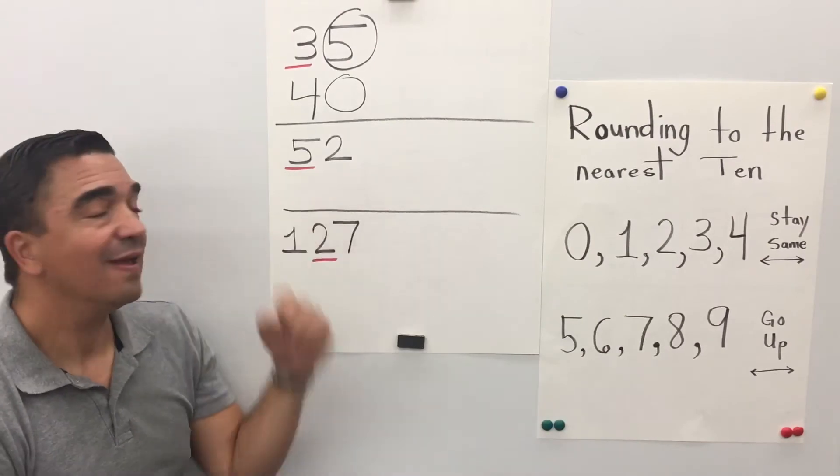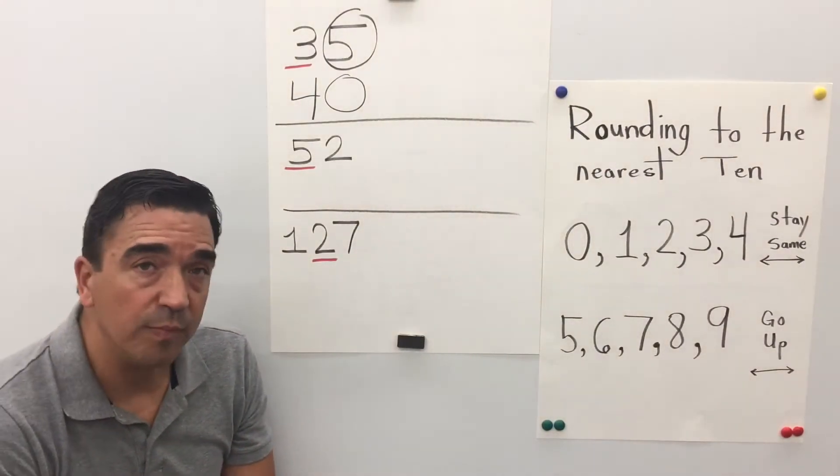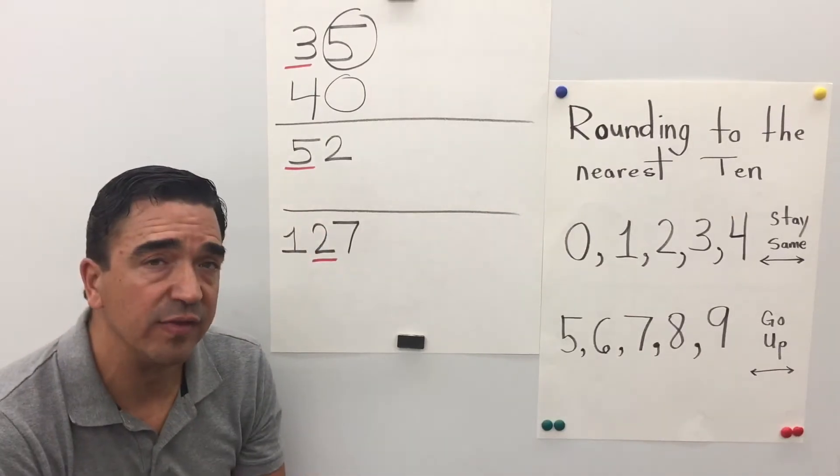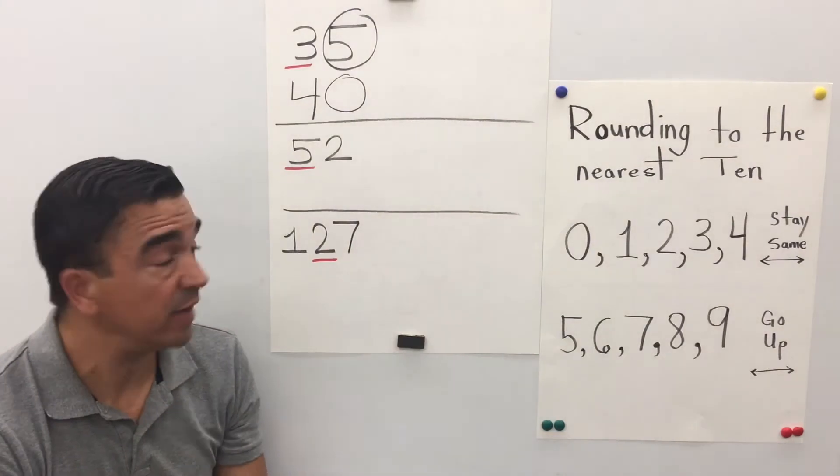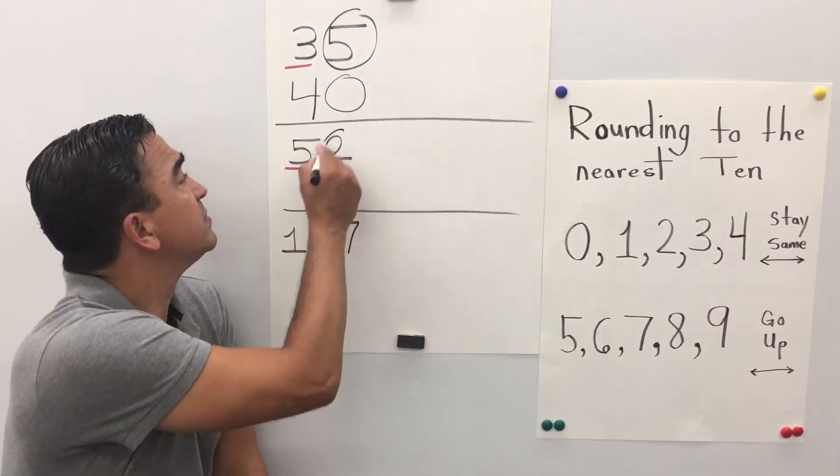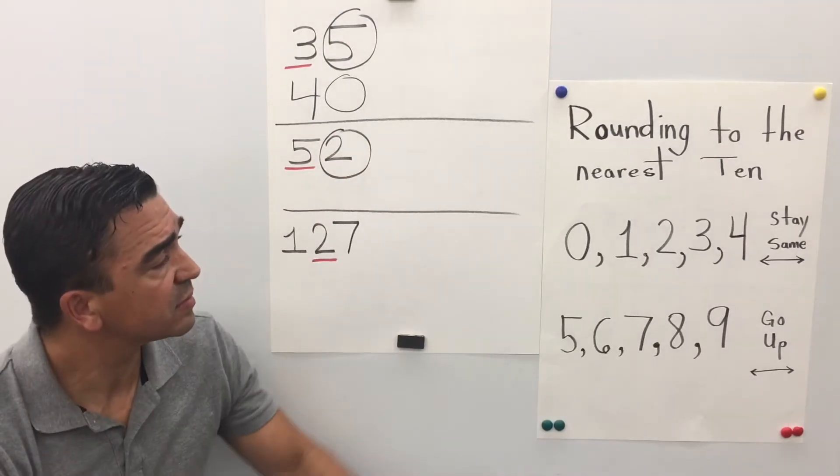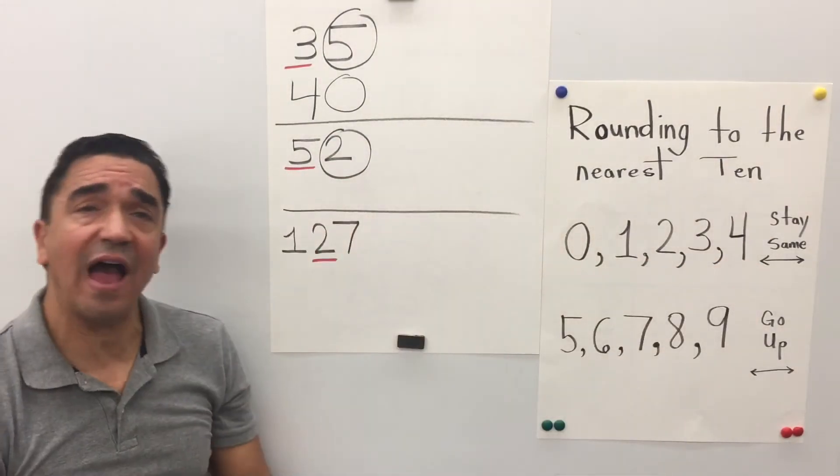So we get problem number 2, 52. The 5 is in the tens place. The 2 is in the ones place, and the 2 is going to tell the 5 what to do. 2 is going to tell the 5 to stay the same.